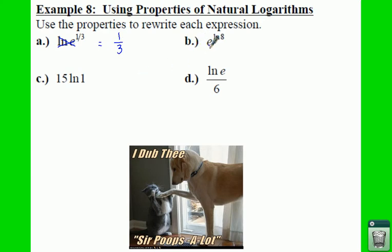For part b, this e is raised to the power of natural log. So that means that you're going to cancel out your e and your natural log and your answer is 8.